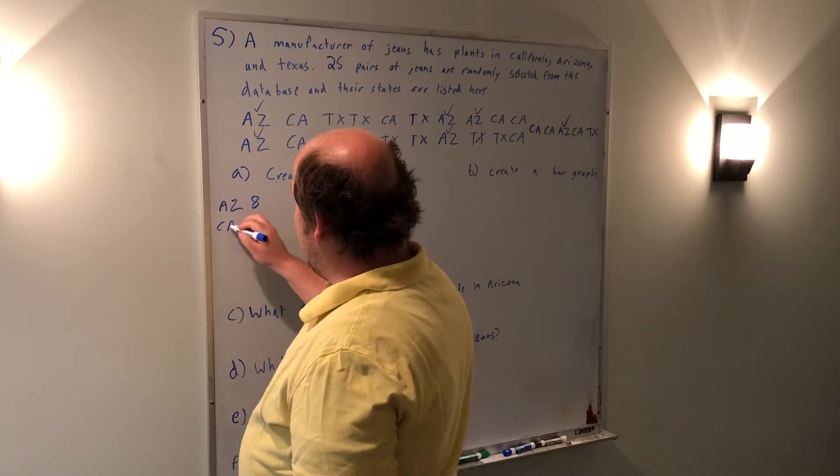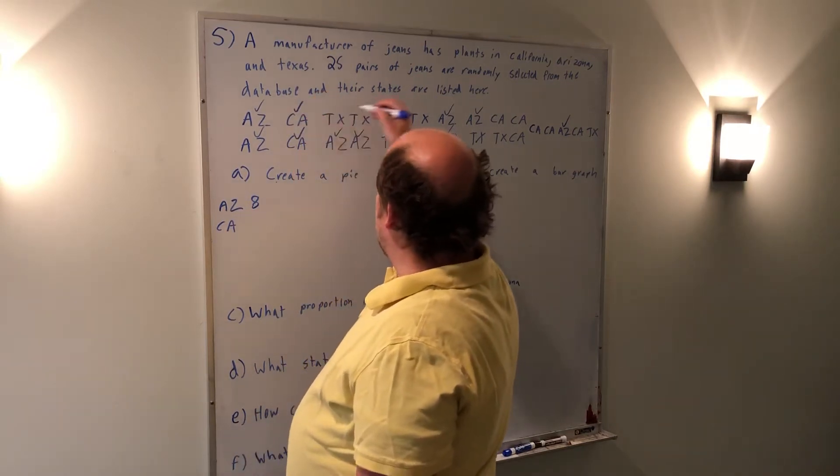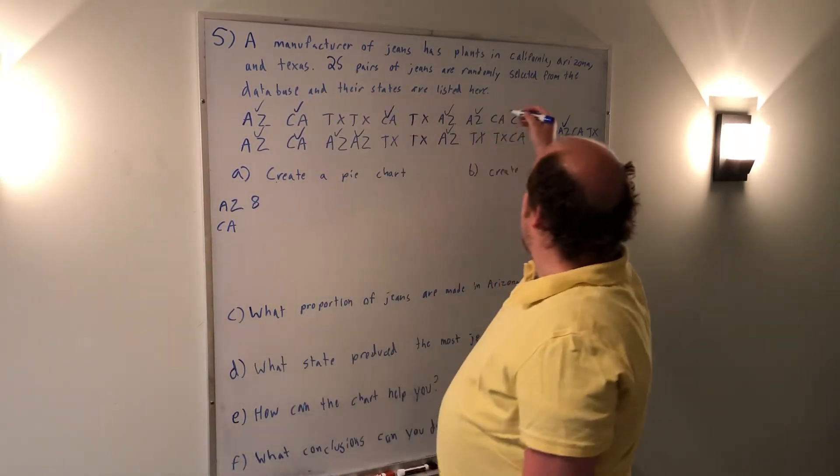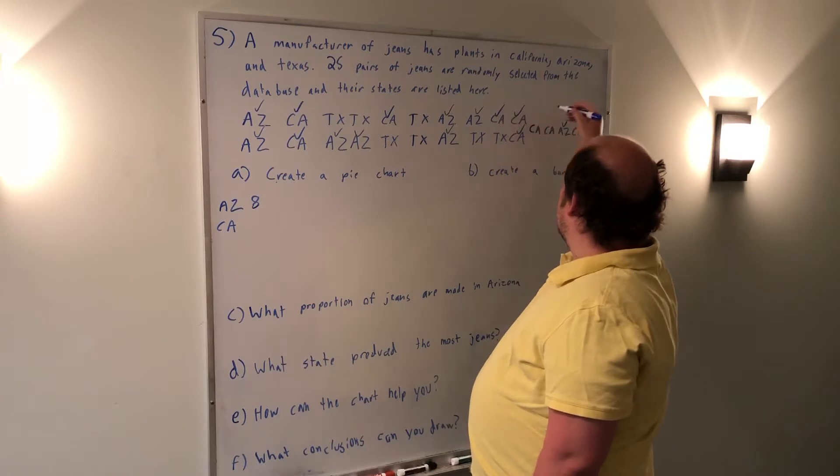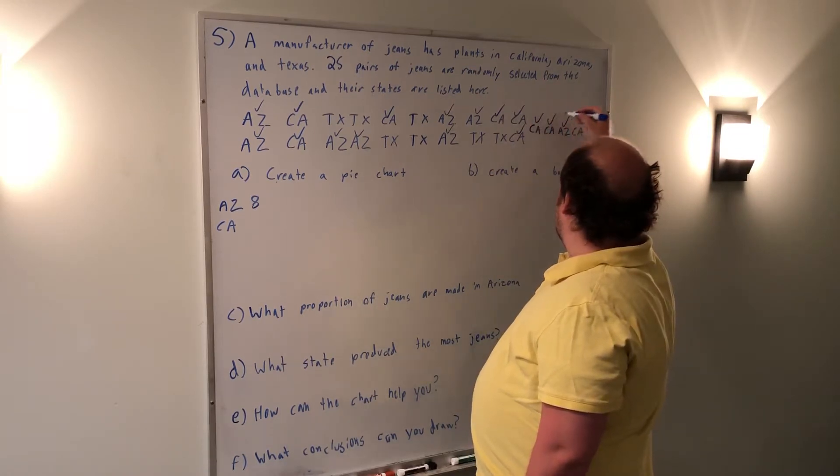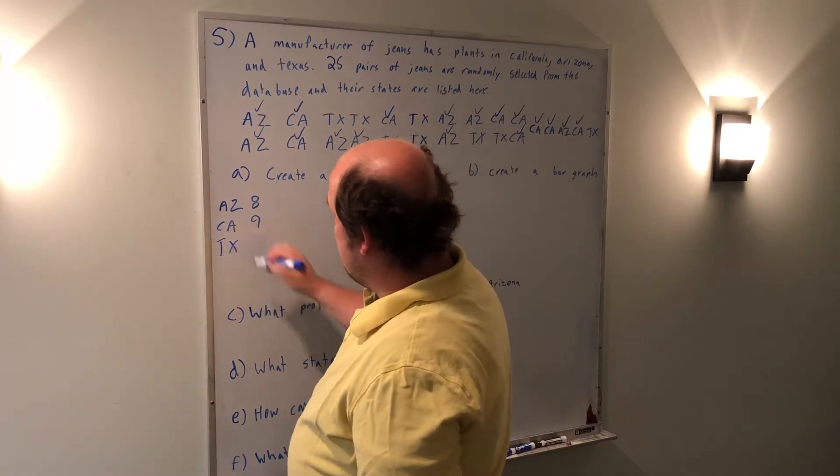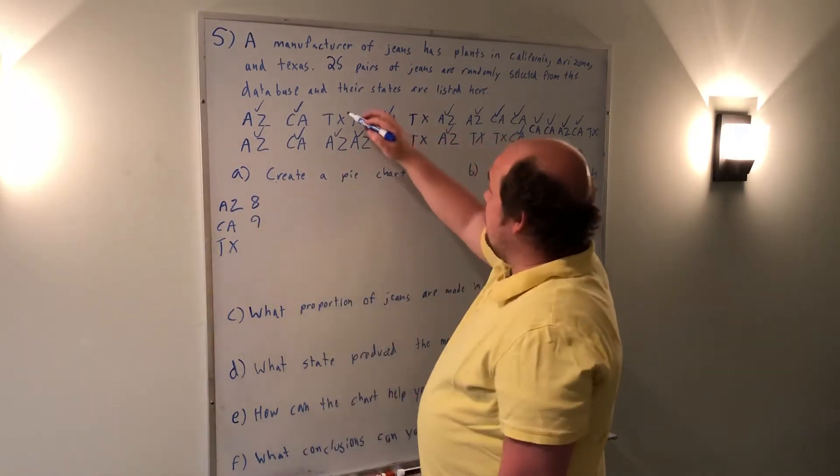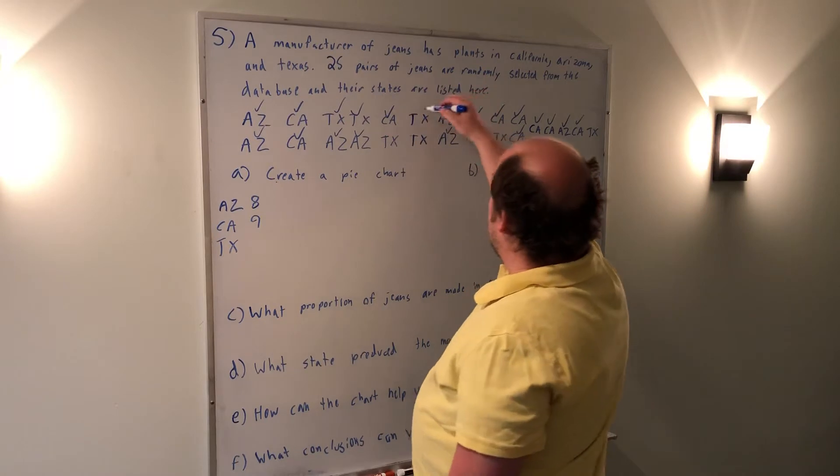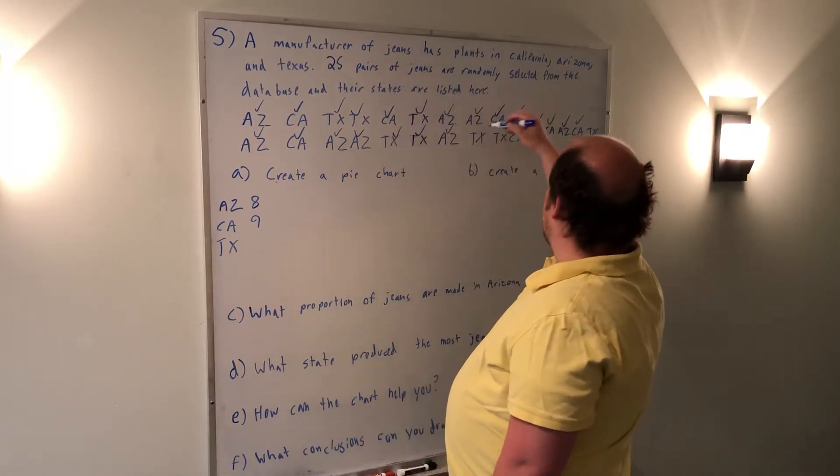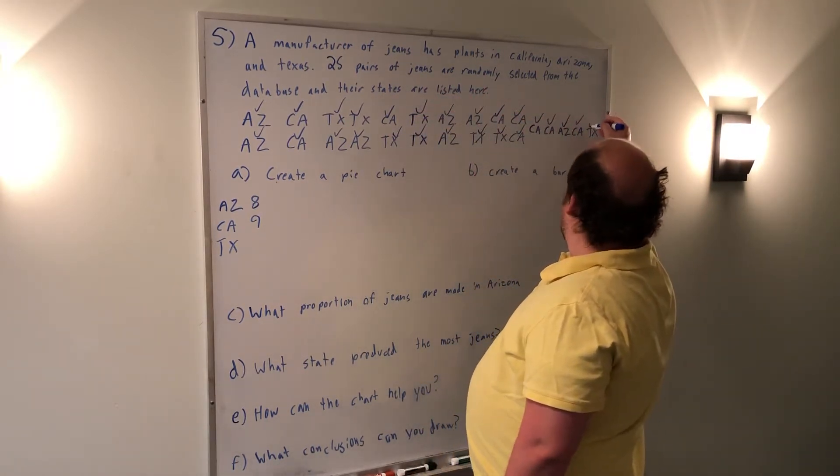Next, I'm going to do California. 1, 2, 3, 4, 5, 6, 7, 8, 9 from California. And finally, Texas. When I do Texas, I get 1, 2, 3, 4, 5, 6, 7, 8.